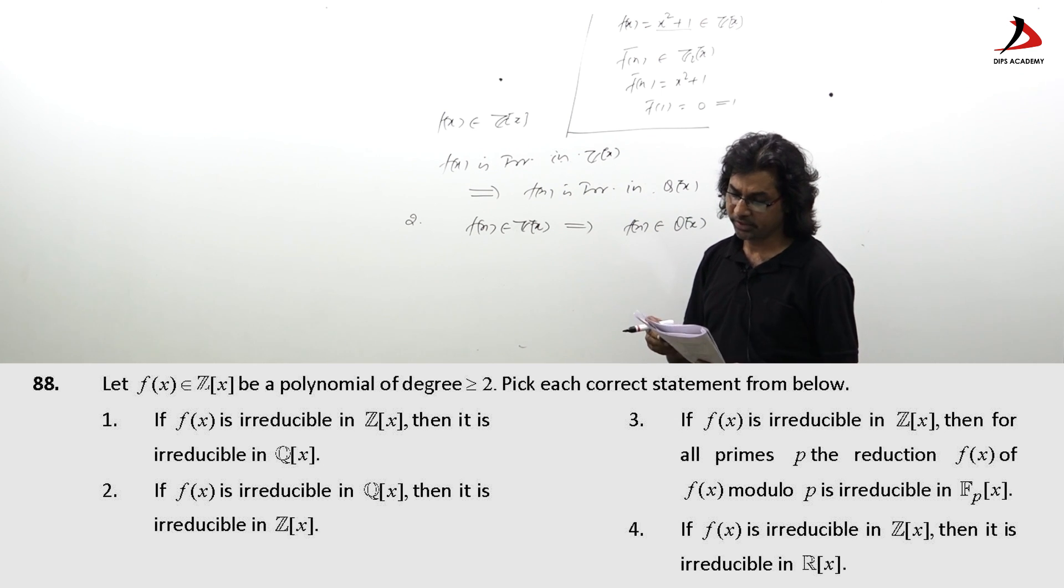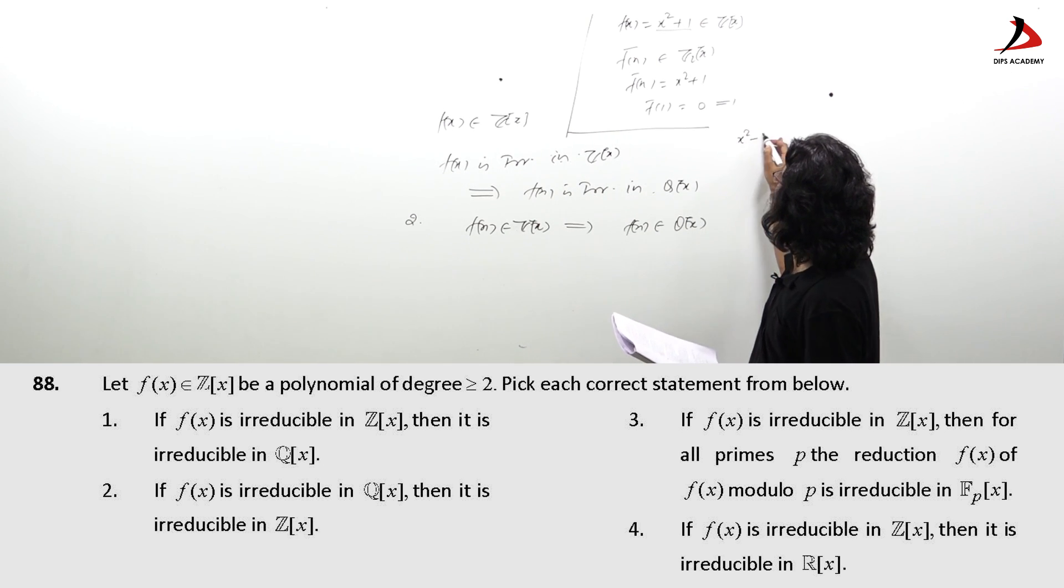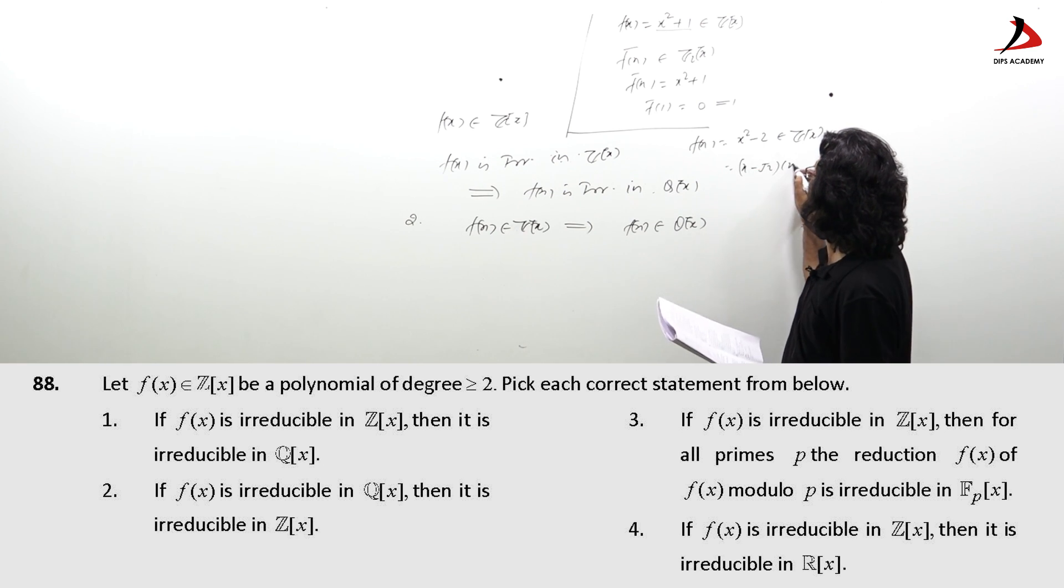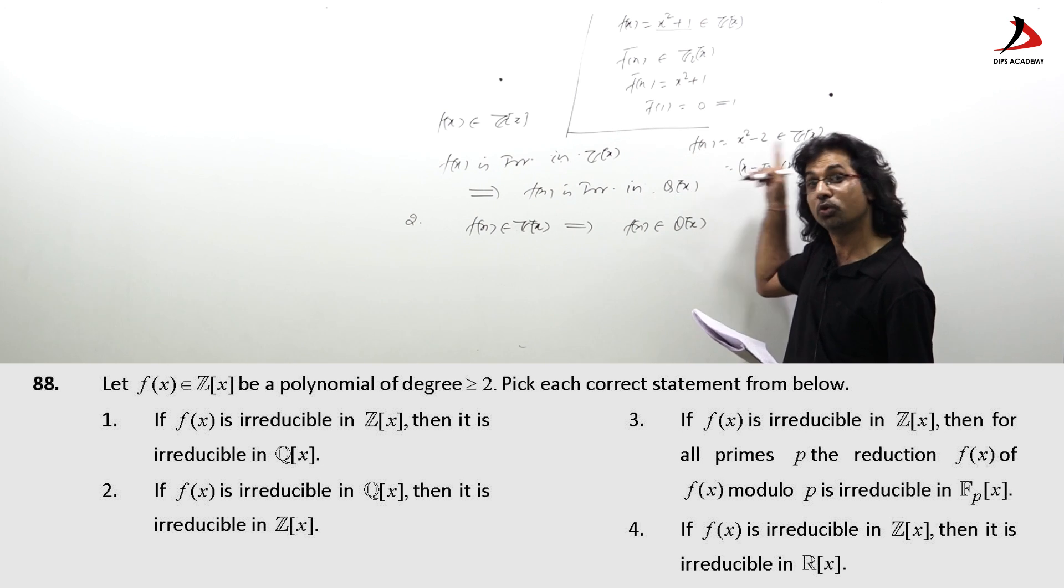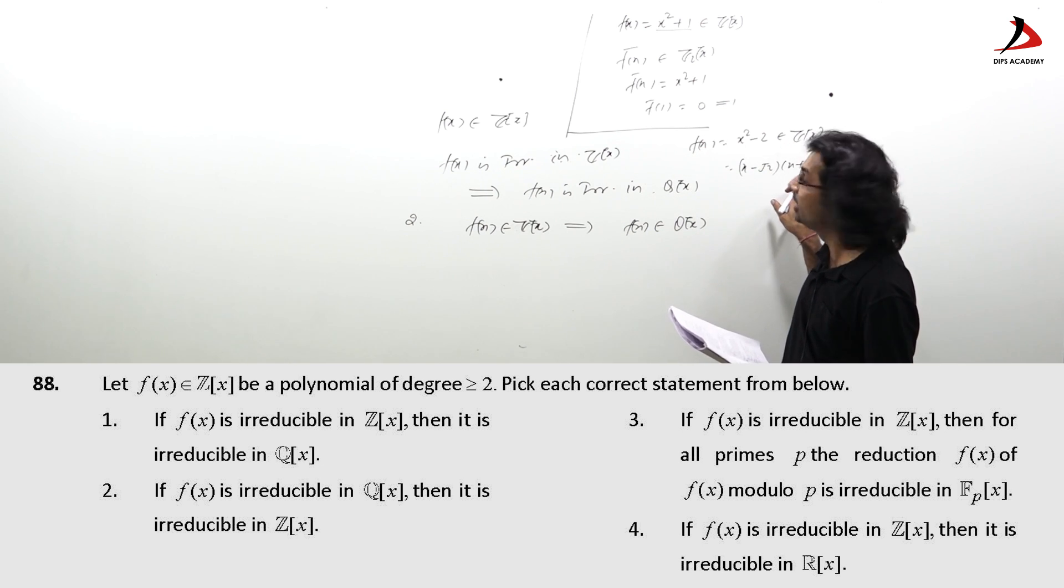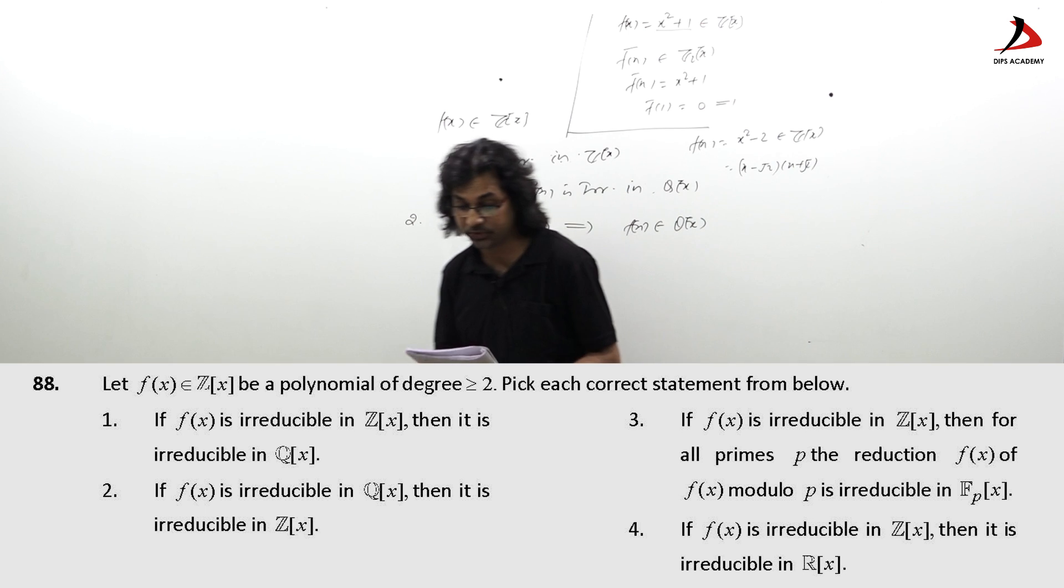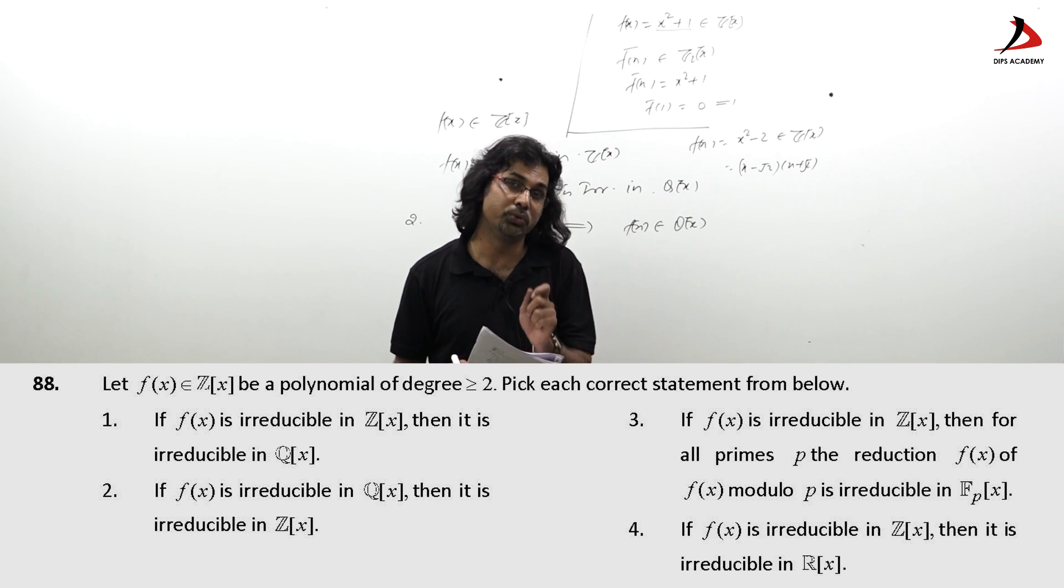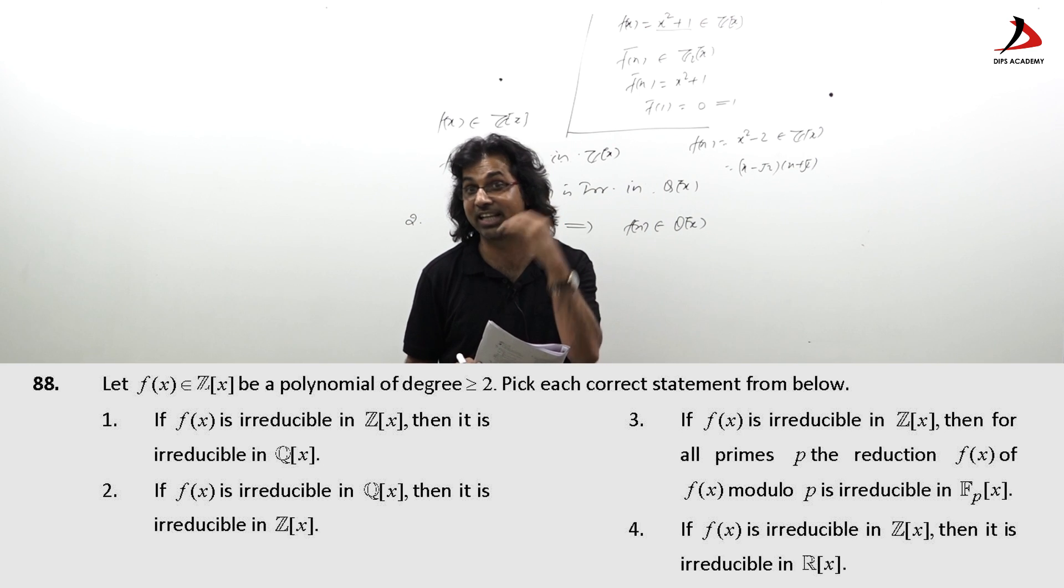Now as fourth option if f(x) is irreducible in Z[x] then it is irreducible in R[x]. Again we have a counterexample x squared minus 2 this belongs to Z[x]. Now this f(x) degree 2 it can be (x minus root 2)(x plus root 2). Certainly this cannot be factorized over Z because the factors coefficients are not from Z, but certainly these are real numbers and it has been factorized over R. So this statement which says irreducibility in Z[x] implies that of in R[x] is incorrect. In fact we must remember that every polynomial over Q or over Z if degree is greater than 2 is not irreducible over R, that means it always can be reduced over R if degree is strictly greater than 2.